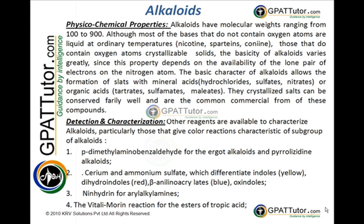Coming to the physicochemical properties, alkaloids have a molecular weight ranging from 100 to 900. Most are bases; those that do not contain oxygen atoms are liquid at ordinary temperatures — such as nicotine, sparteine, and coniine. Those that do contain oxygen atoms are crystalline solids. The basicity of alkaloids varies greatly, since this property depends on the availability of a lone pair of electrons on the nitrogen atom. The basic character of alkaloids allows them to form salts with mineral acids — mainly hydrochloric acid and nitrates — and also with weak organic acids like tartrates, sulfamates, and maleates.